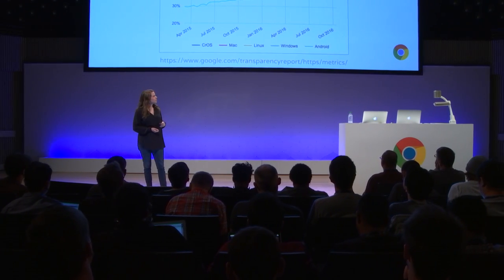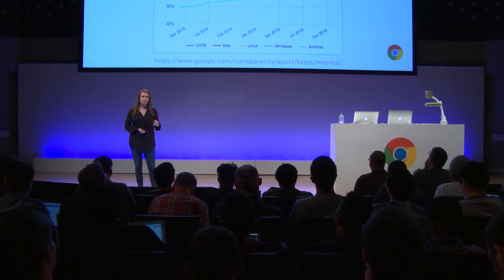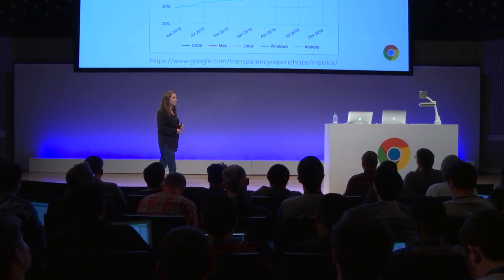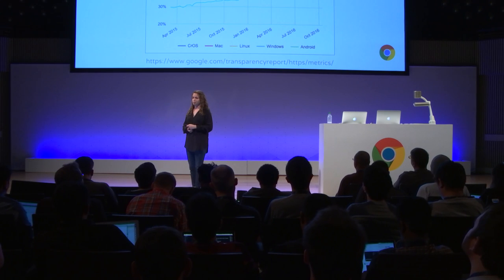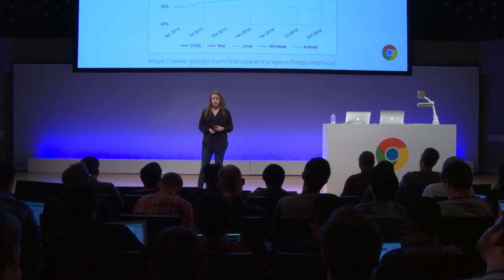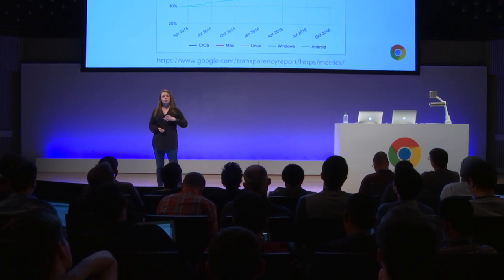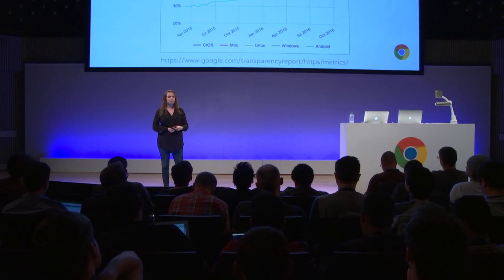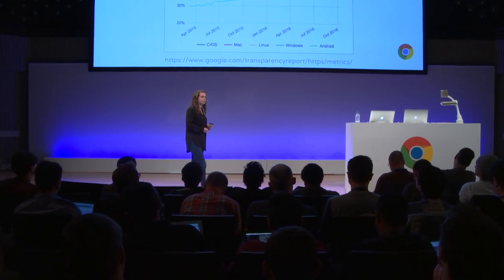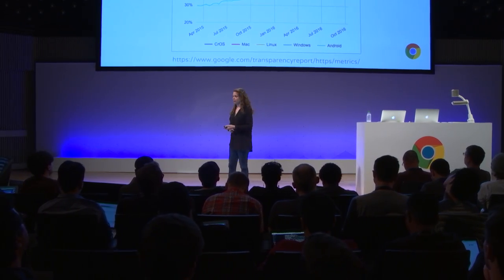That's why last week we released a new section in the Transparency Report that releases data about HTTPS usage as Chrome users see it. One of the milestones we passed recently is that on desktop platforms, Chrome users now load over 50% of their pages over HTTPS. This is a big milestone. Overall, we're pretty happy about the trend — HTTPS usage, when we look at the percent of pages that Chrome users load, is slowly but steadily increasing. That's what we want to see.